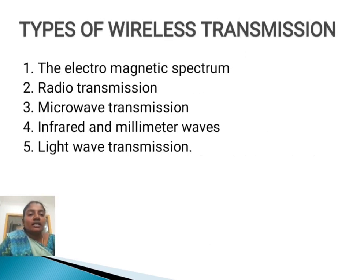Types of Wireless Transmission. The first one is the electromagnetic spectrum. The second one is radio transmission. The third one is microwave transmission. The fourth one is infrared and millimeter waves. The fifth one is light wave transmission.